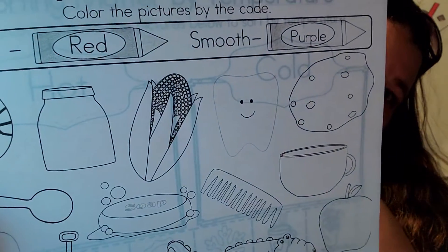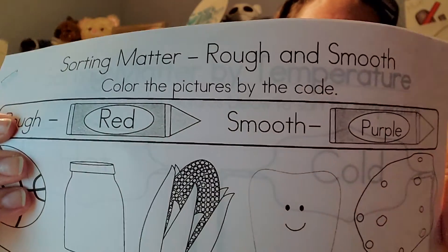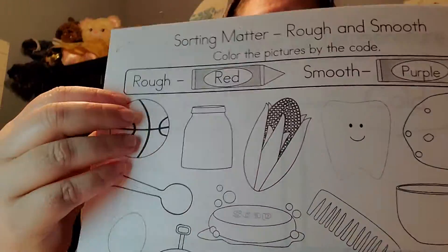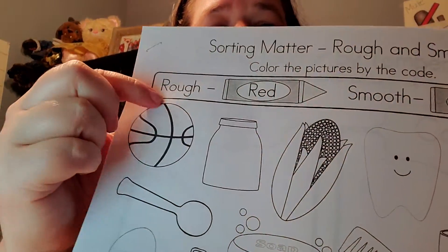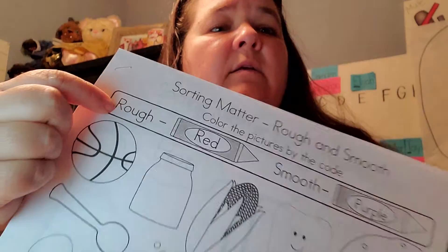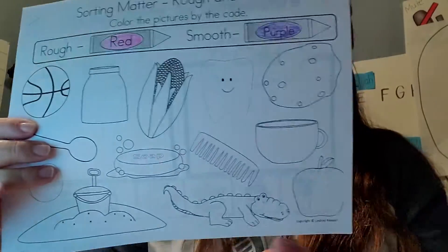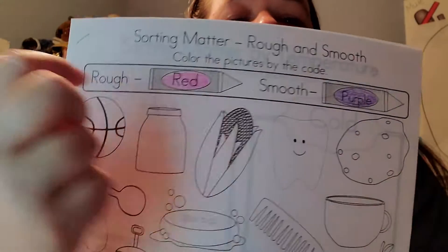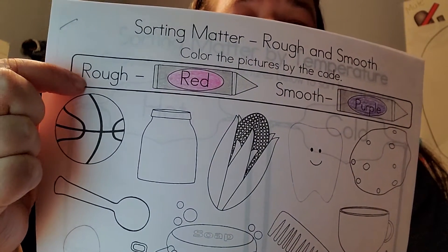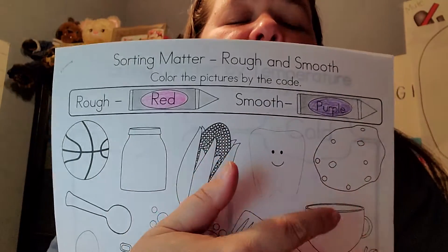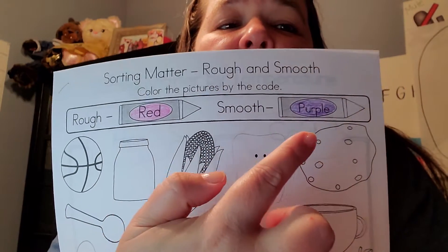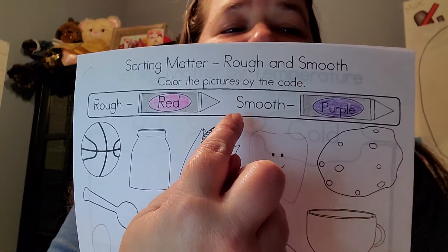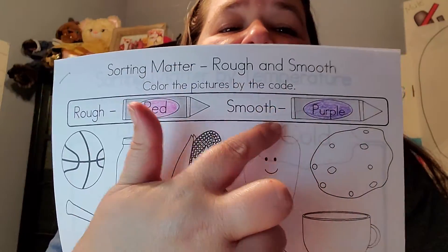So I hope that helps you understand the difference between rough and smooth. You're going to get this paper — it says 'rough and smooth' at the top. You're going to color everything that is rough red — rough starts with an R. You're going to color everything that has a smooth surface purple — smooth starts with an S. If you forget which words are which, just ask your adult.